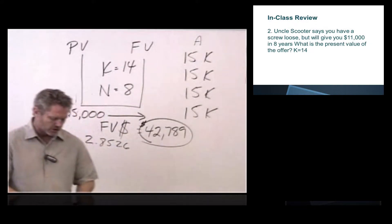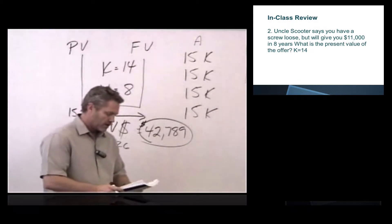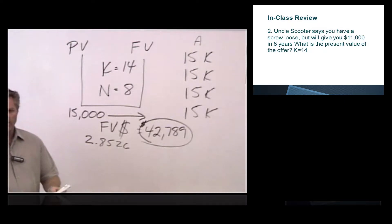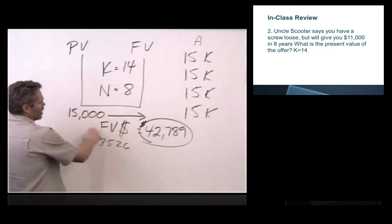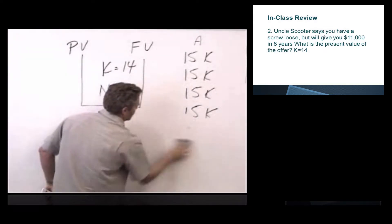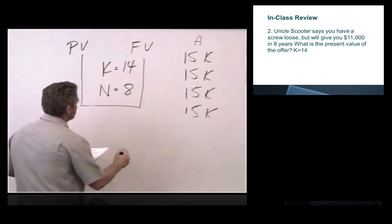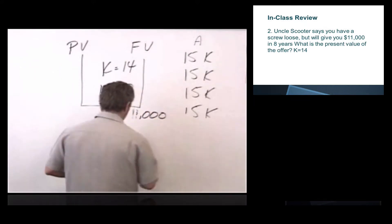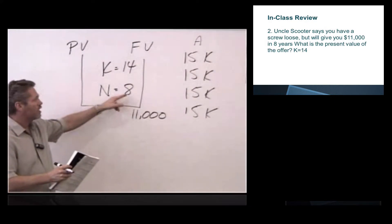Question two. Uncle Scooter says you have a screw loose, but will give you $11,000 in eight years. What is the present value of the offer? So first, this certainly is just like family, where family is going to borrow $15,000 and offer you $11,000. So we know that he wants $15,000. He would have to pay us $42,738. If he's going to give us $11,000 in the future, that's way out here in the future. So $11,000 goes under future value. And he's not giving us $11,000 each year, just a one-time payment. It's eight years from now, so N is still 8, K is still 14.